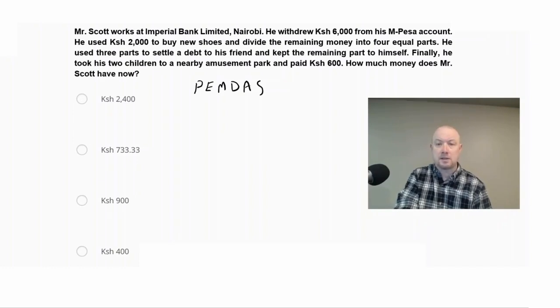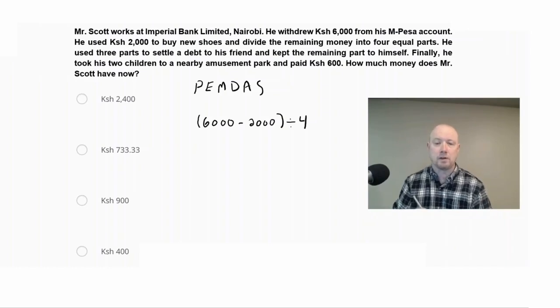So Mr. Scott started out with 6,000 Kenyan shillings, and it says he used 2,000 of that first. So we're going to subtract 2,000, and we're going to group that before we divided the remaining money into four parts, before we divide by four. So we're going to have a division by four. And then it said he took his children to a nearby amusement park and paid 600 Kenyan shilling. So we're going to subtract 600 from that, okay?